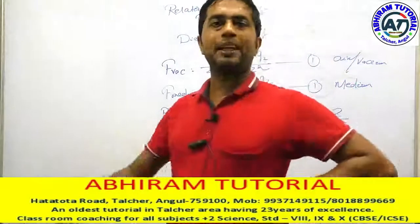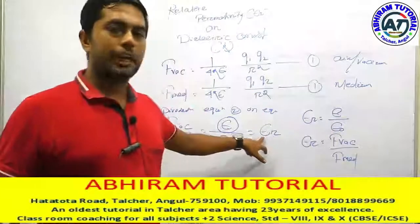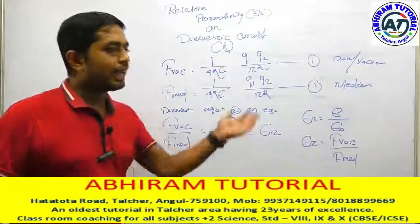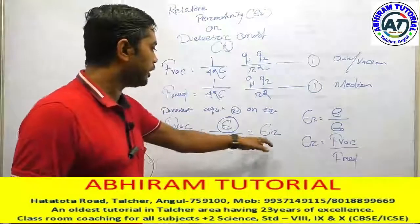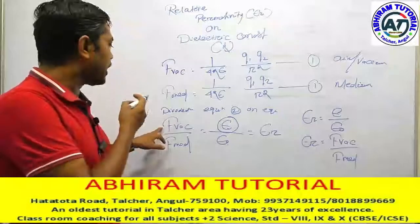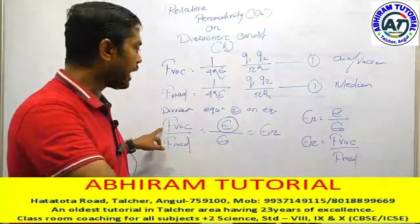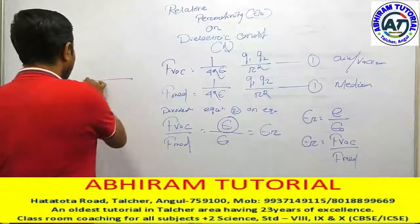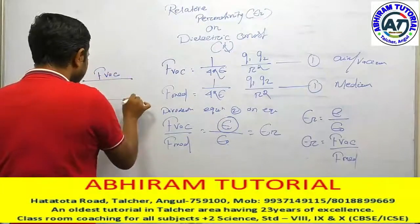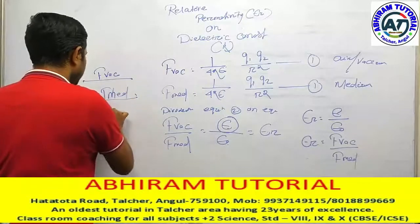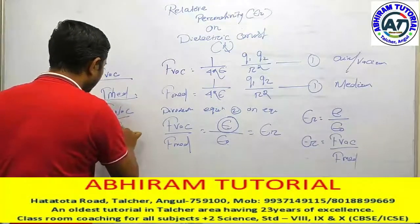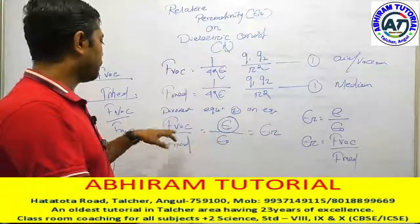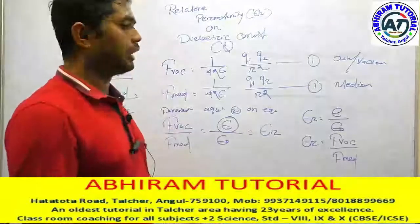The first definition: relative permittivity is the permittivity of the medium divided by permittivity of air or vacuum, written as epsilon_R = epsilon/epsilon_0. Another way to express it: epsilon_R equals the force between two charges in vacuum divided by the force between the same two charges in the medium.